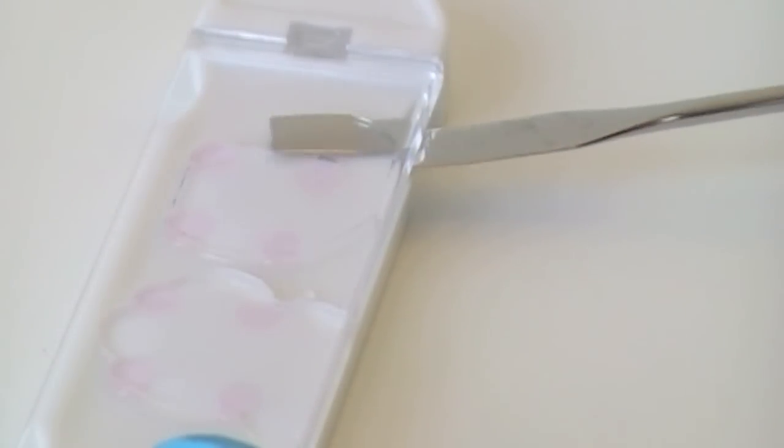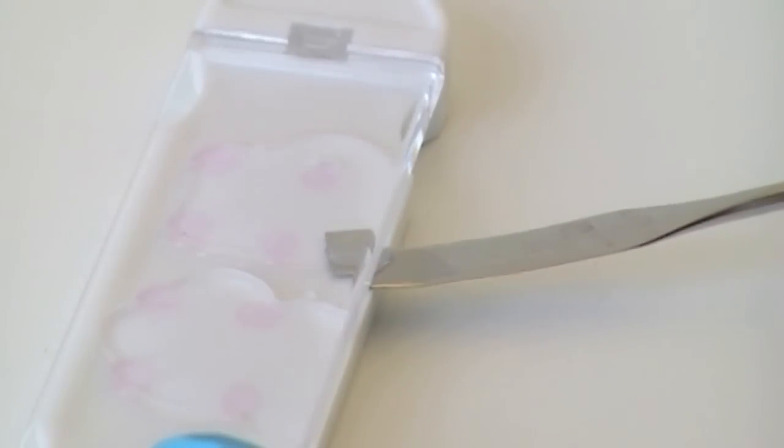Then, with a spatula, make sure to bring PBS around each and every gel disc. Every edge should be wetted to minimize gel sticking to the gel caster.